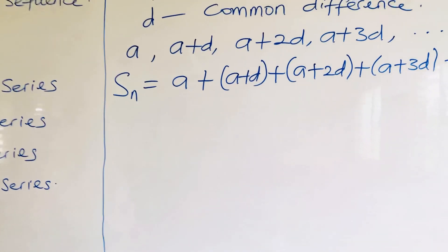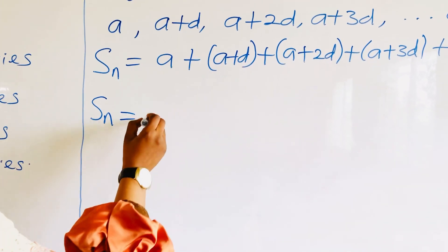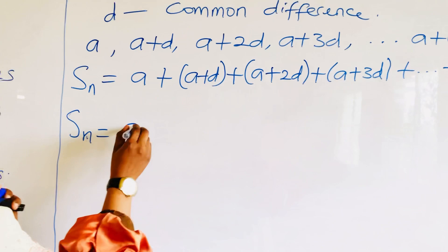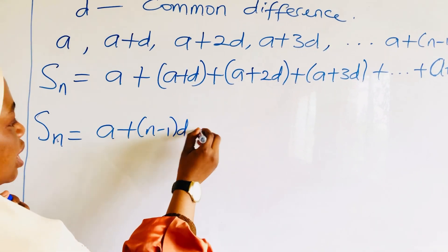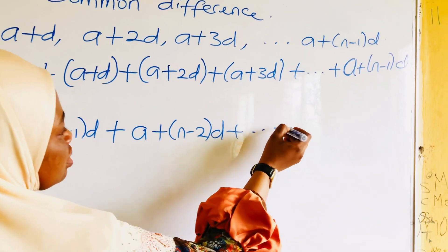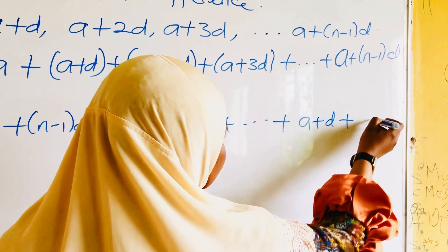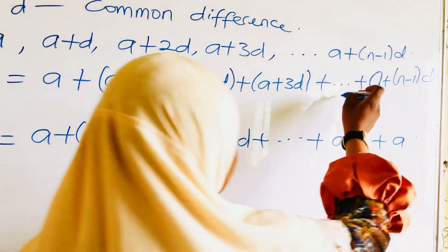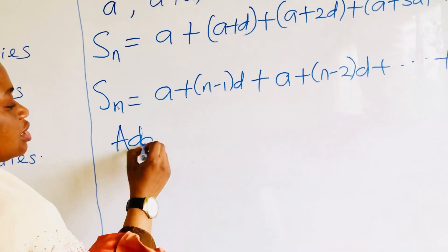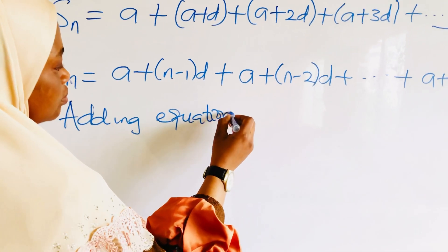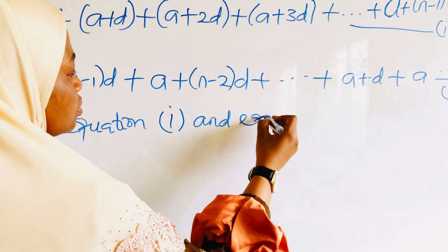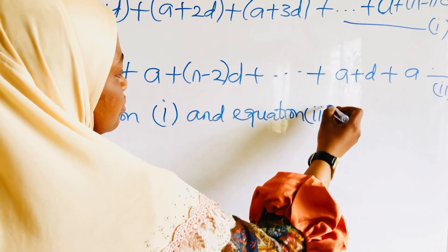Now if we reverse the series, it is still the same sum. Starting from the nth term, Sn equals a plus (n minus 1)d, then the second-to-last term a plus (n minus 2)d, continuing down to the second term, and finally the first term a. Let's call this Equation 2. Adding Equation 1 and Equation 2 gives us the following.